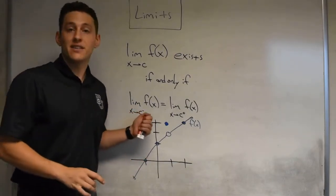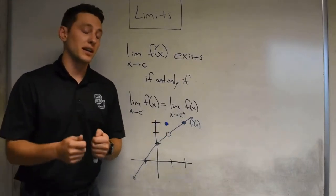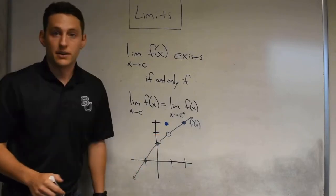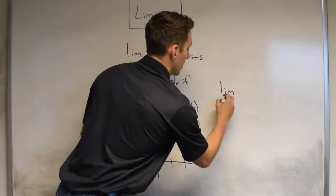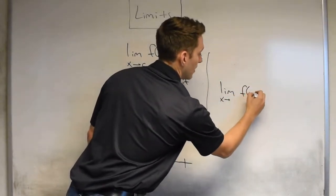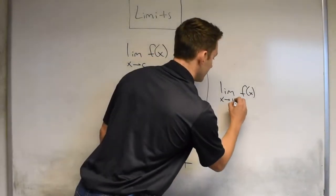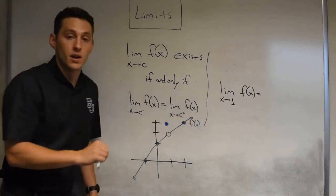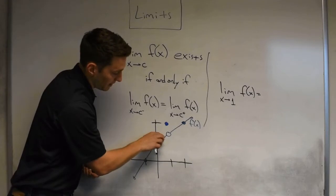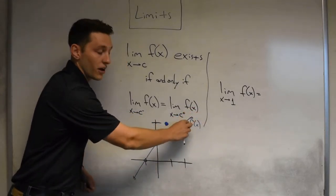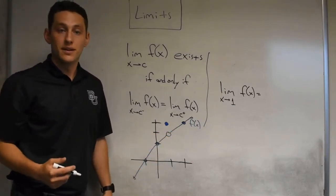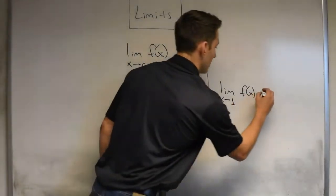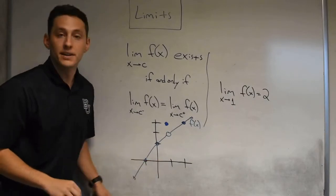Just because we have the left hand side and the right hand side agreeing doesn't mean we're going to get the actual function value. Consider this example again — we said we should fill in the dot right there. That answered the question: what is the limit of our function as x approaches 1? The left hand limit estimate would end up being 2, and the right hand side following all those y values we'd guess a y value of 2 as well. So the left hand limit is 2, the right hand limit is 2 — that means the full limit exists and equals the common value of 2. So the limit of this function as x approaches 1 really is 2.